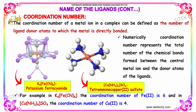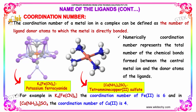For Cu(NH₃)₄SO₄, the coordination number of copper is 4. This is what is called the coordination number.